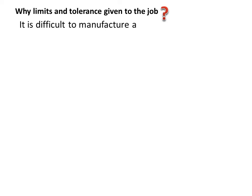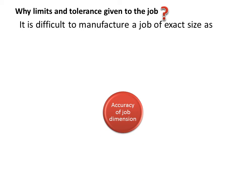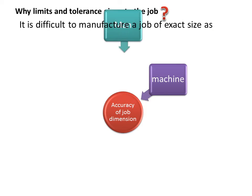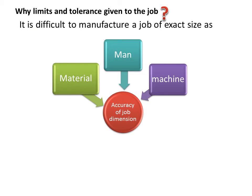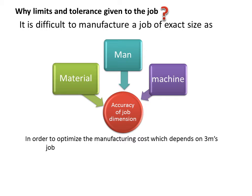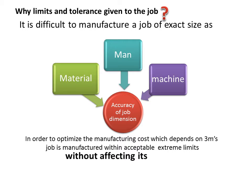Because it is difficult to manufacture a job of exact size, as the accuracy of job dimensions depends on machine, man, and material — and all three factors are cost-dependent. To improve accuracy, we must improve machine, man, and material quality, which increases manufacturing cost. Hence, to optimize manufacturing cost, the job is manufactured within acceptable extreme limits without affecting its purpose.